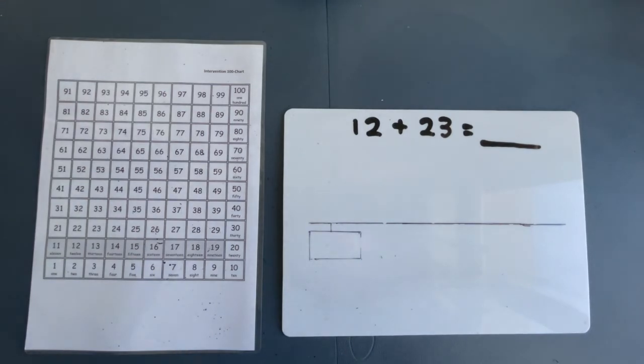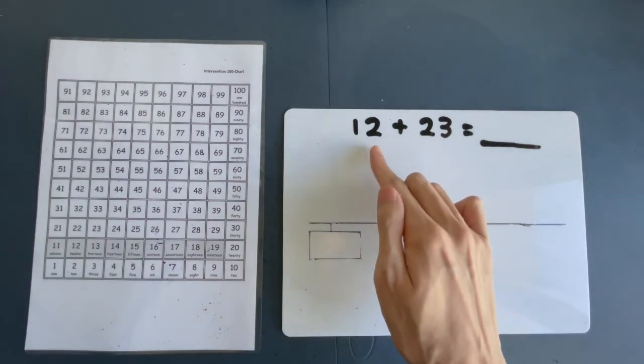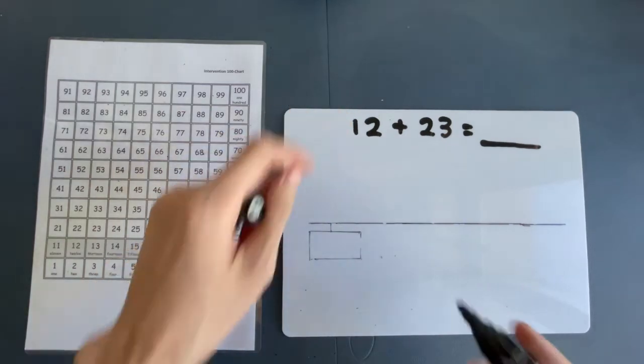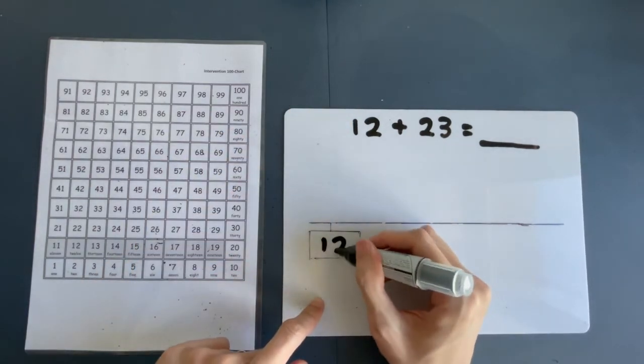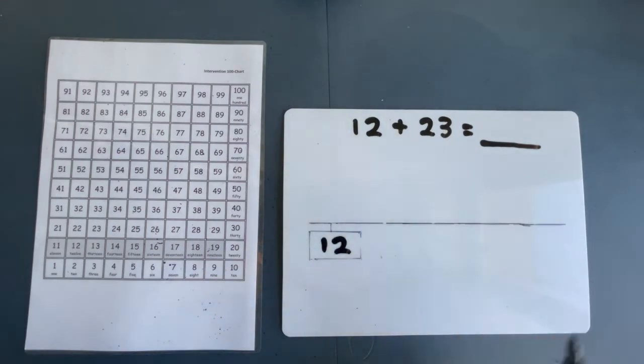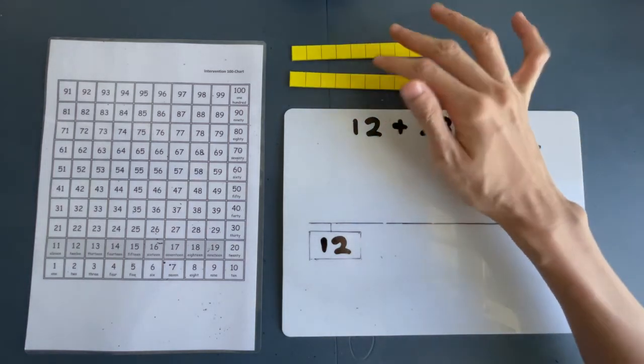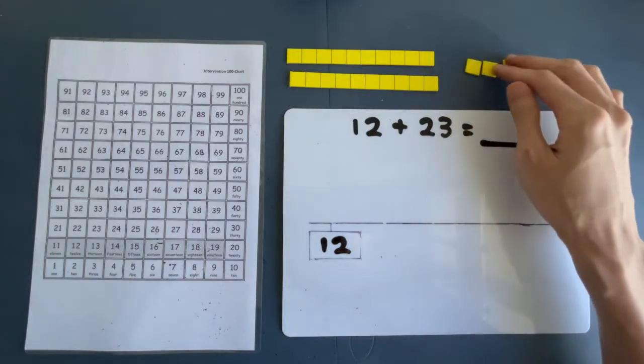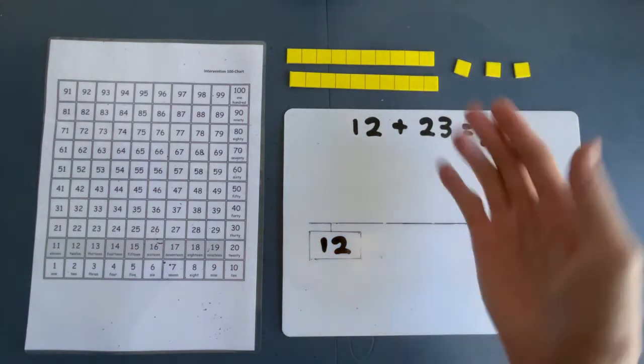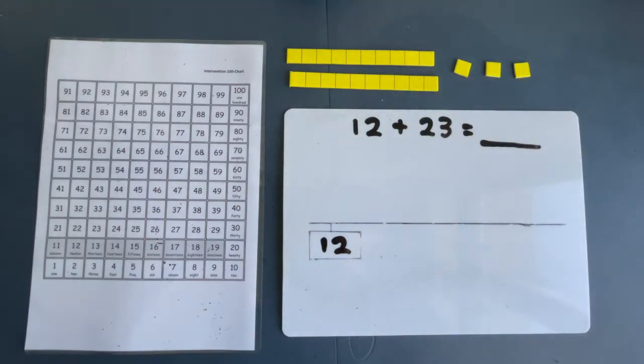We have arrived at our difficult question. 12 plus 23. So, first step, 12 right in the box. And that's our start line. So, how do we add 23? You look at that number and then you ask me, do I jump in 10s or do I jump in 1s? The answer is both. And why? Because 23 is made up of 2 tens and 3 ones.